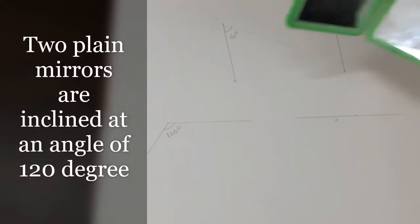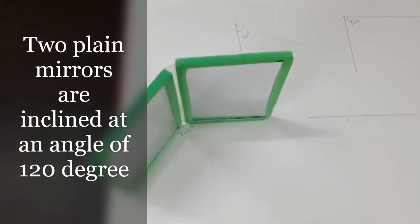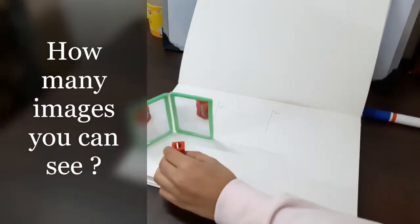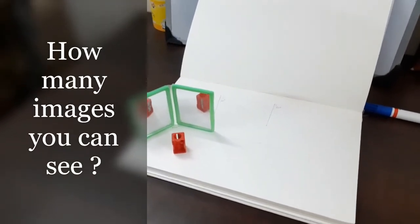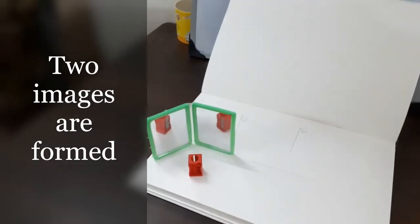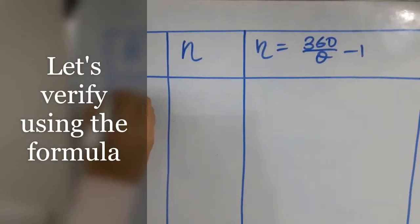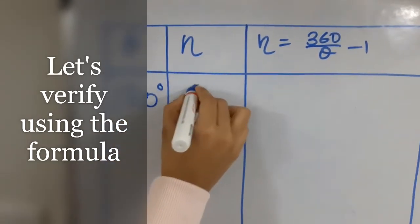Let us place this mirror at an angle of 120 degrees. Let us place this object here and see how many images are formed. You can see two images are formed. We placed the mirror at an angle of 120 degrees and we observed two images.